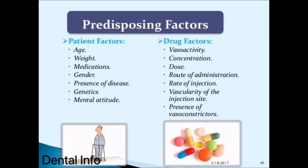Patient factors affecting overdose include age, weight, medications, gender, presence of disease, genetics, and mental attitude. Drug factors include vasoactivity, concentration, dose, route of administration, rate of injection, vascularity of the injection site, and presence of vasoconstrictors.